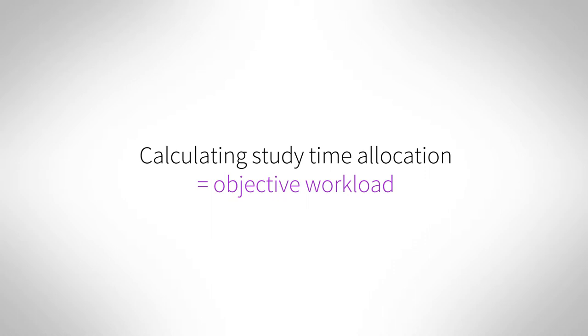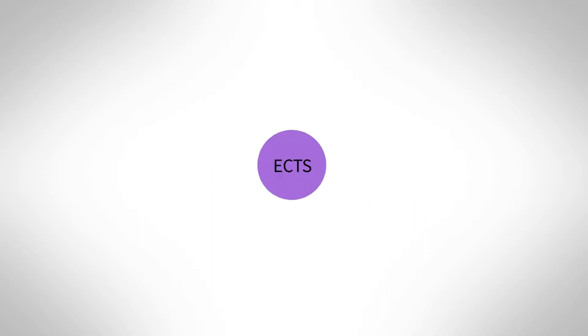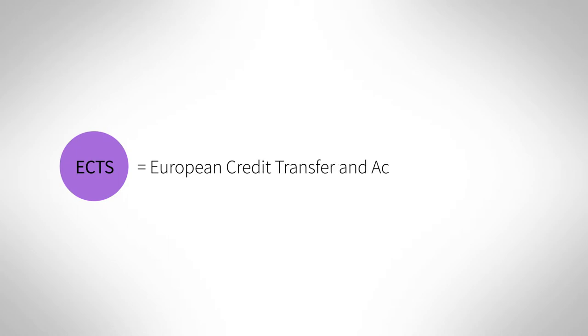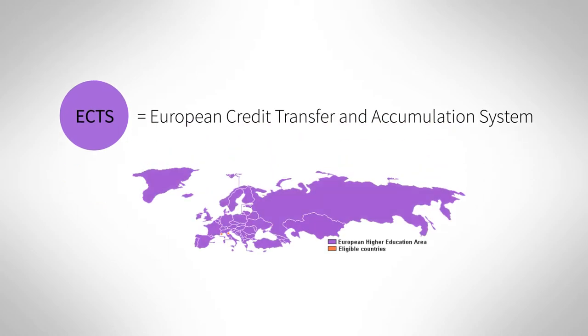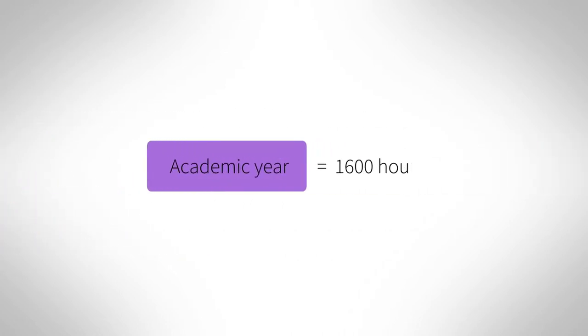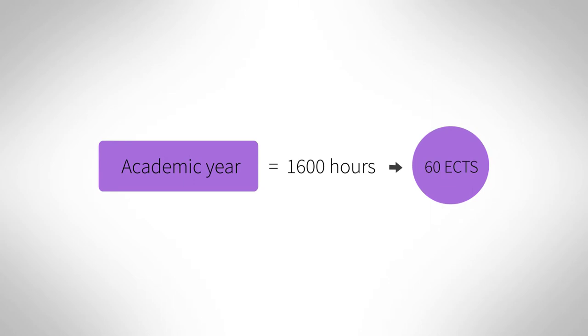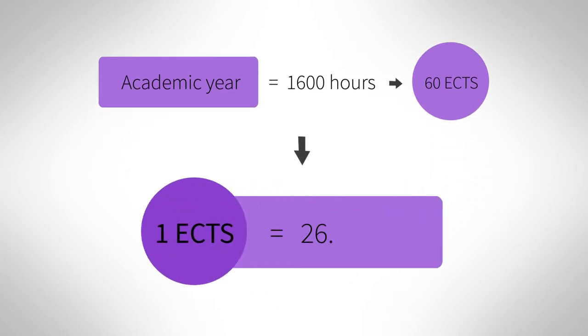Now let's look at how study time allocations can be calculated in practice. The ECTS, that is the European Credit Transfer and Accumulation System, was developed by the European higher education area to provide students with an estimation of the time required to take a course. The ECTS credit system is used in most European countries to provide comparable criteria and increase transparency amid the growing global dimension of education. An academic year is defined as 1,600 hours which equals 60 ECTS credits, and thus one credit is 26.7 hours.